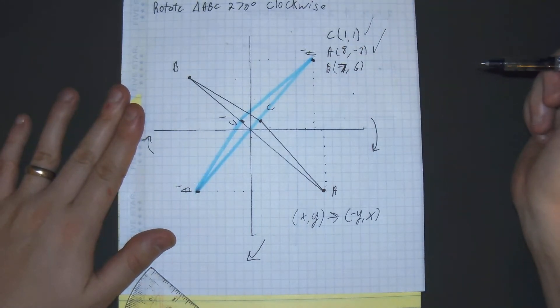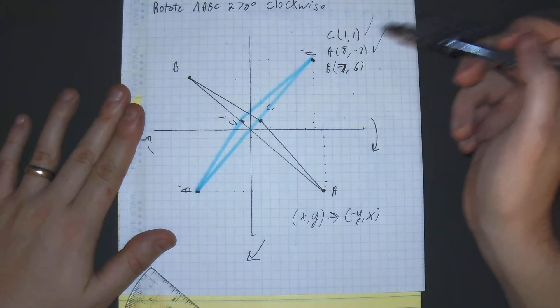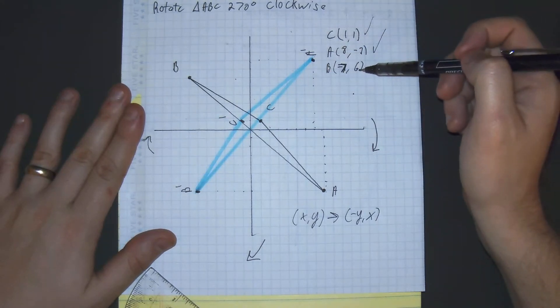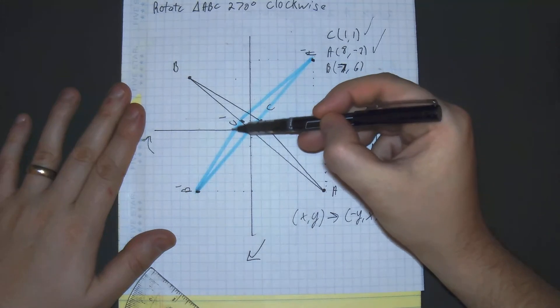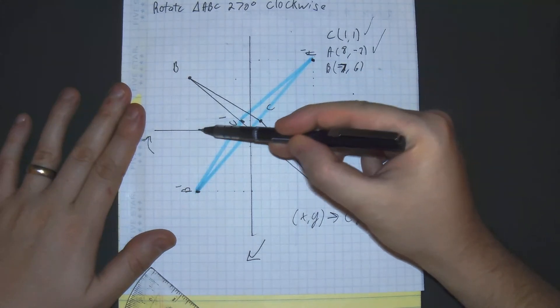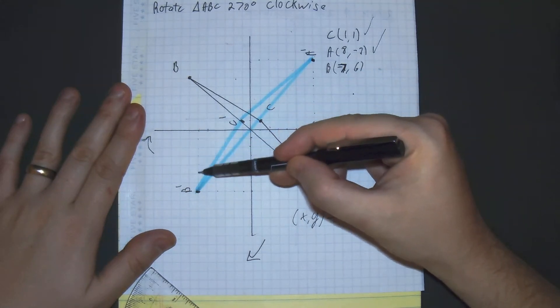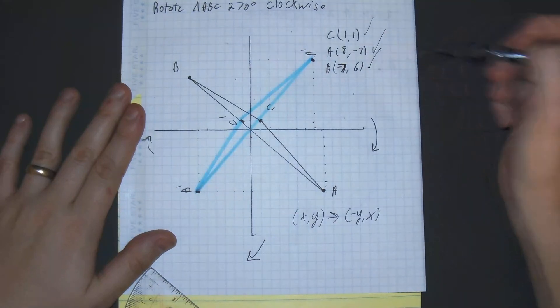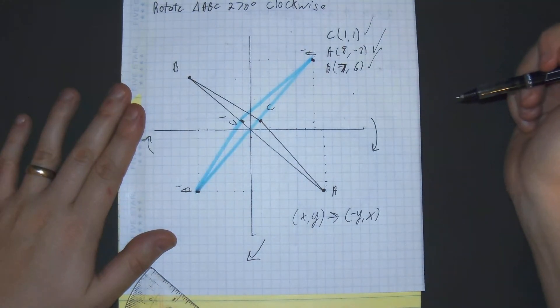Now let's just make sure our B is good with this rule. So it should be negative 6, negative 7. Counting: 1, 2, 3, 4, 5, 6, and 1, 2, 3, 4, 5, 6, 7. Alright, everything looks perfect. We're good to go.